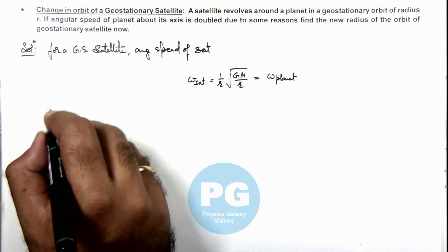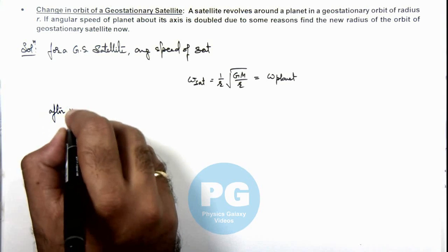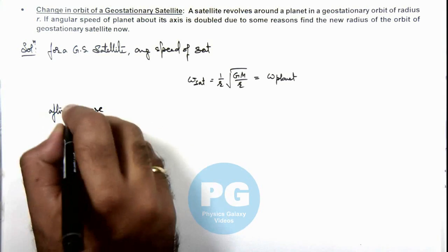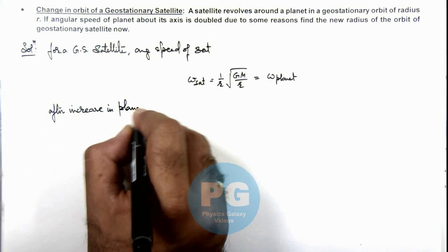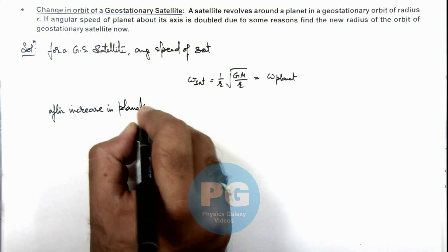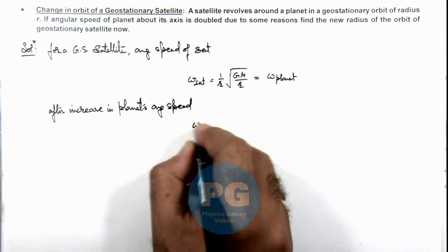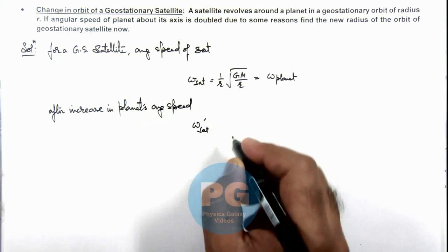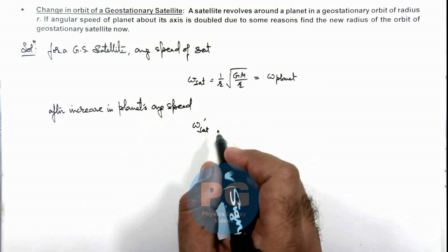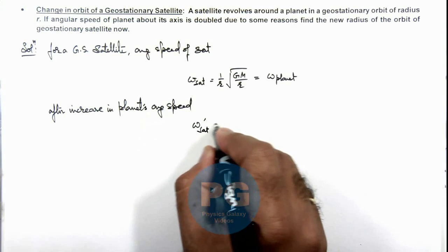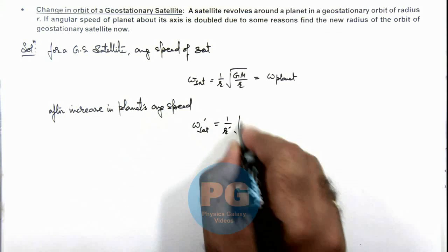So we can write after increase in the planet's angular speed, if we calculate the omega satellite prime which is the new angular speed for the geostationary satellite, this can be written as (1/r')√(GM/r').